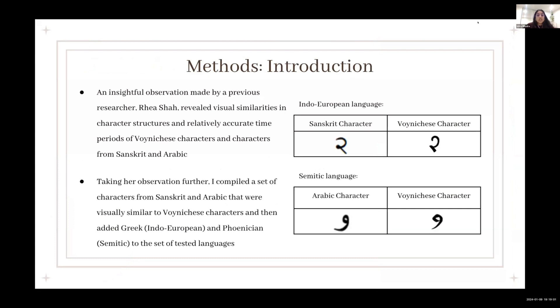So an introduction to the methods. A previous researcher, Rea Shah, revealed visual similarities in character structures and relatively accurate time periods of Voynich's characters and characters from Sanskrit and Arabic. On the right, Sanskrit is an Indo-European language, and it shows the similarity between the Sanskrit letter R and the Voynich's letter R. And then Arabic is a Semitic language, and there's also a similarity between the two characters. Taking our observation a little further, I compiled a set of characters from Sanskrit and Arabic that were visually similar to Voynich's characters.